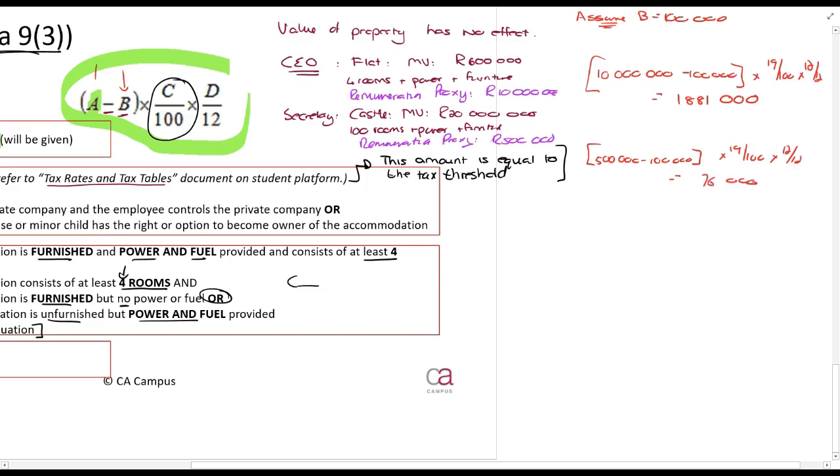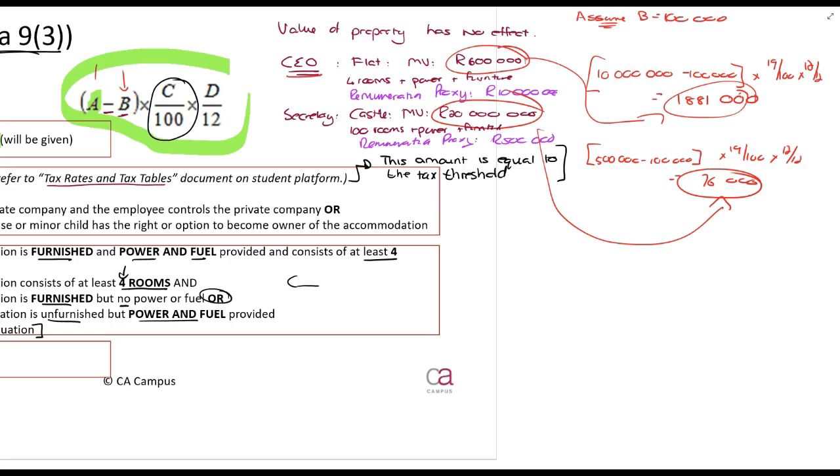So although the CEO gets a flat of R600,000 and the secretary gets a castle of R20 million, the secretary has a fringe benefit cash equivalent of R76,000 and the CEO of almost R2 million. You can see it has nothing to do with the value of the property - it has to do with the value of the remuneration. Basically, the more you earn, the less necessary it is for your employer to give you a place to stay. That's the idea, so you get penalized more.